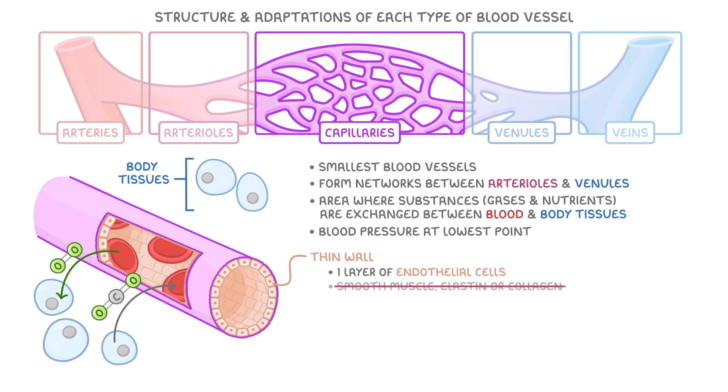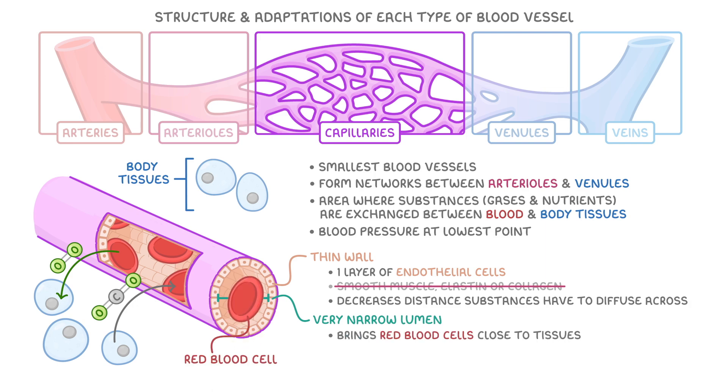Having such thin walls is actually really useful for capillaries because it decreases the distance that substances have to diffuse across, and this makes the exchange process really fast and efficient. They also have a very narrow lumen which brings red blood cells close to the tissues that need the oxygen that these cells carry. Capillaries are also highly branched, and this maximizes their surface area so that substances can diffuse across more quickly.